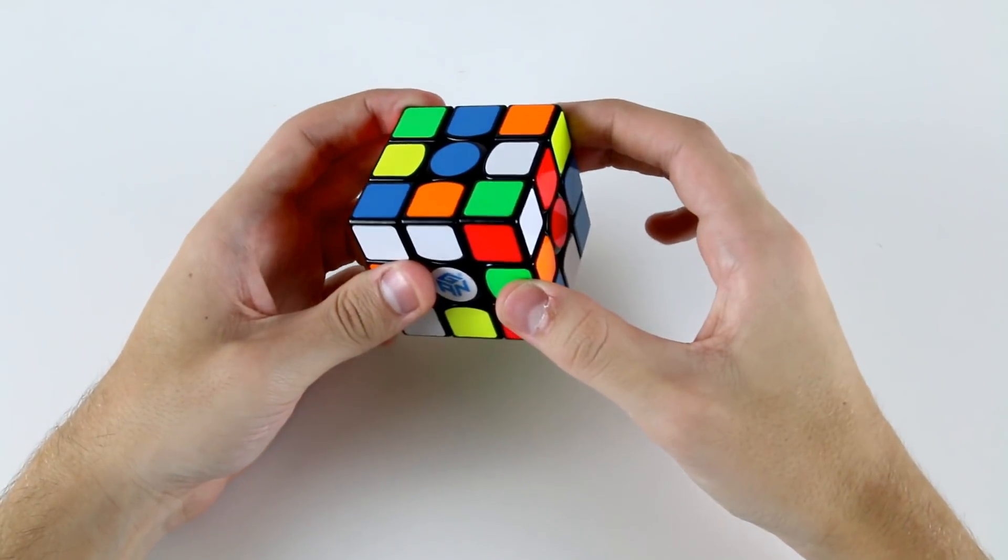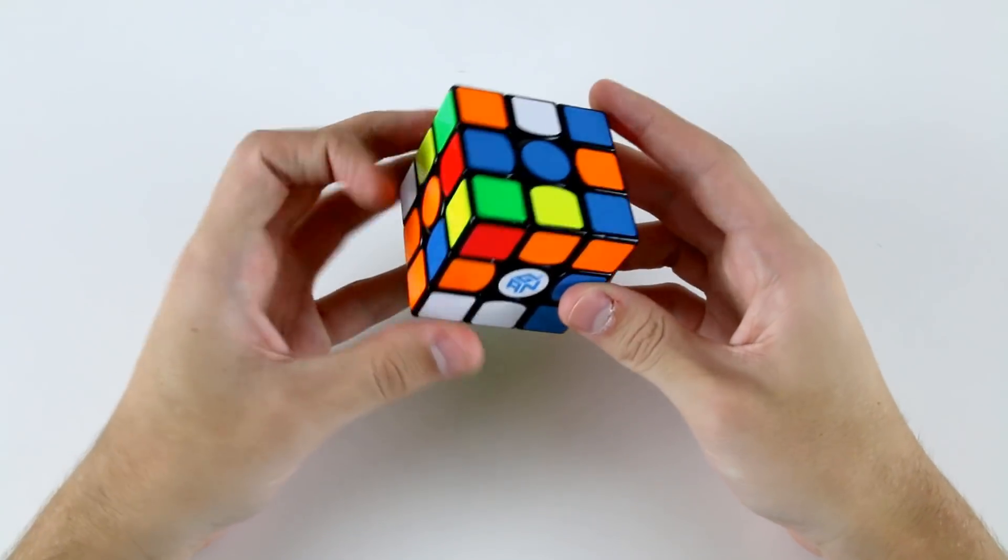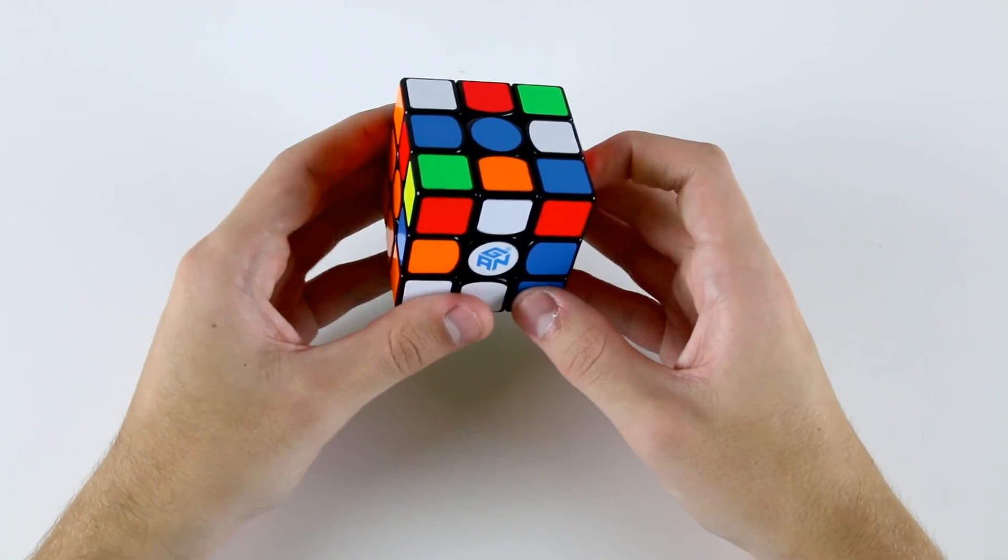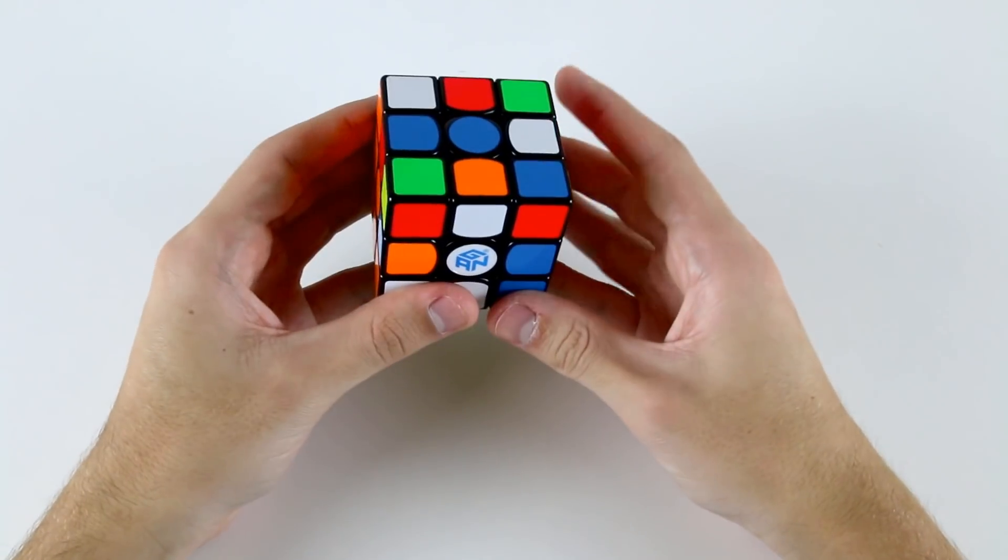So I can do R D R' D' R D' U' and then do these two straight away. Now immediately after that, I can do these two like this, do a wide U'.